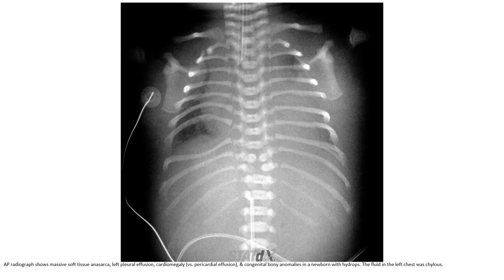AP chest radiograph showing massive soft tissue, anasarca, large pleural effusion, cardiomegaly versus pericardial effusion, and congenital bony anomaly in the newborn with chylothorax. The fluid from the large chest was chylous.